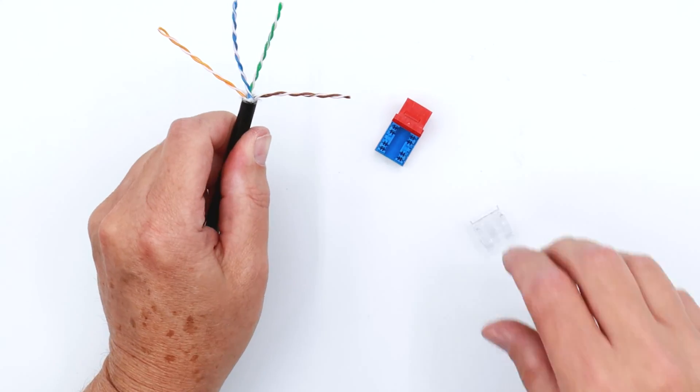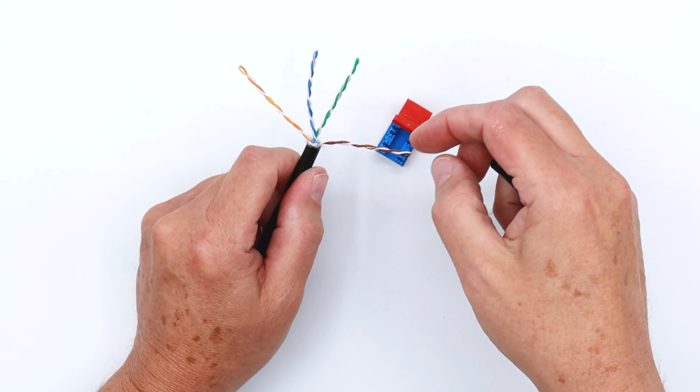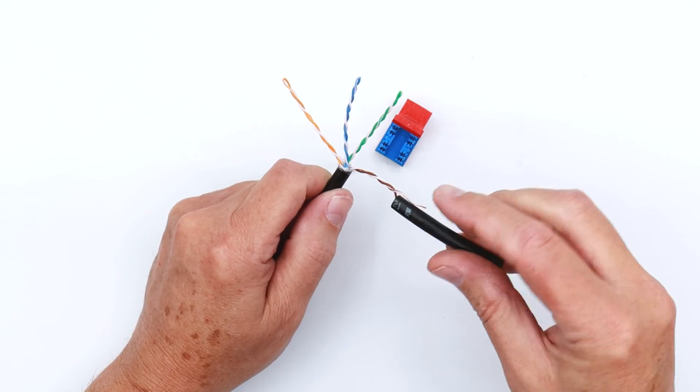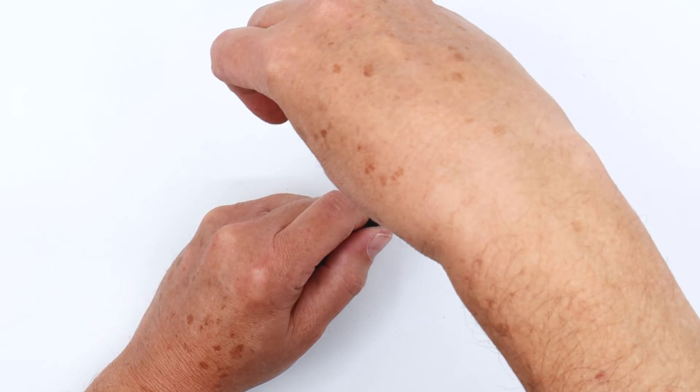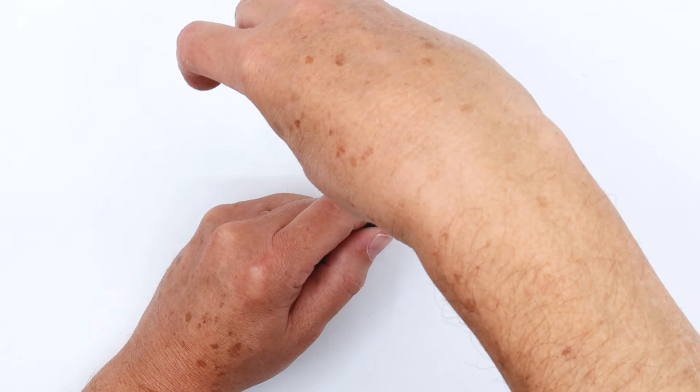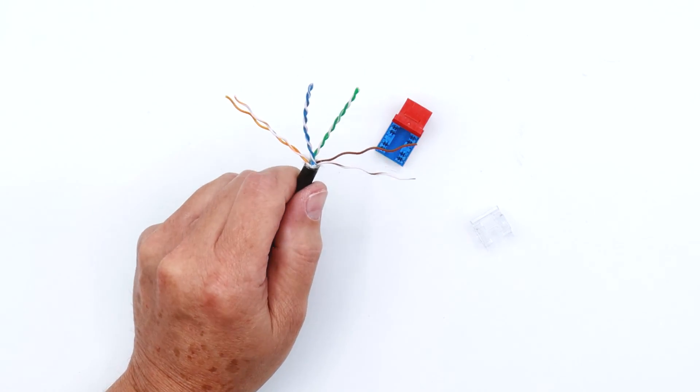So what I normally will do, and this is recommended, is take your piece of cable jacket you had and untwist the brown and the orange pairs all the way. You don't have to worry about the quarter inch, or sorry, the half inch rule when it comes to this particular operation.